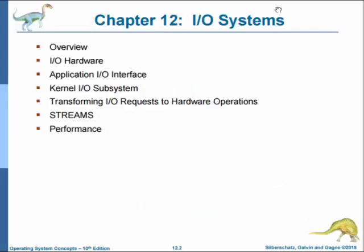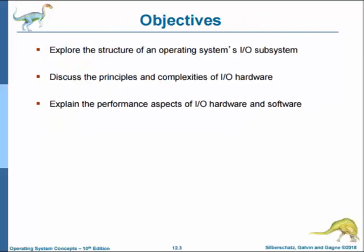The topics that will be covered are: overview, input-output hardware, application input interface, kernel input-output subsystem, transforming input-output requests to hardware operations, streams, and performance. At the end of this chapter, you will be able to explore the structure of an operating system's input-output subsystem, discuss the principles and complexities of input-output hardware, and explain the performance aspects of input-output hardware and software.